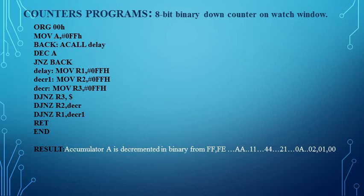For this purpose, initially we load register A with FFh. After that, we call the delay program using CALL delay — the delay is needed to see the counting values clearly. Since we are writing code for a down counter, we need to decrement the value from FFh down through FEh, FDh, and so on, until 00h. For this, we use DEC A, and again use the instruction JNZ back to keep performing the decrement operation.